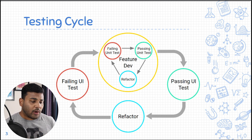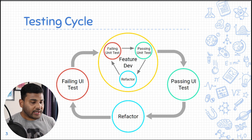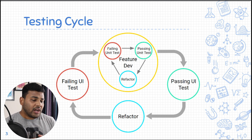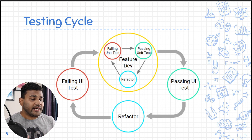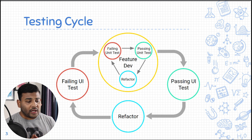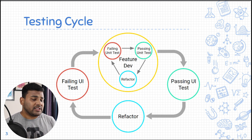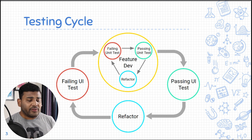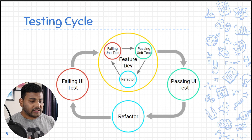Once all the modules for the feature are created and pass all the unit tests, we can move ahead. We also need to test the UI, and we need to test all modules together to assure that the feature is working as intended. If you are confused, don't worry — we will see the practical implementations of every step.